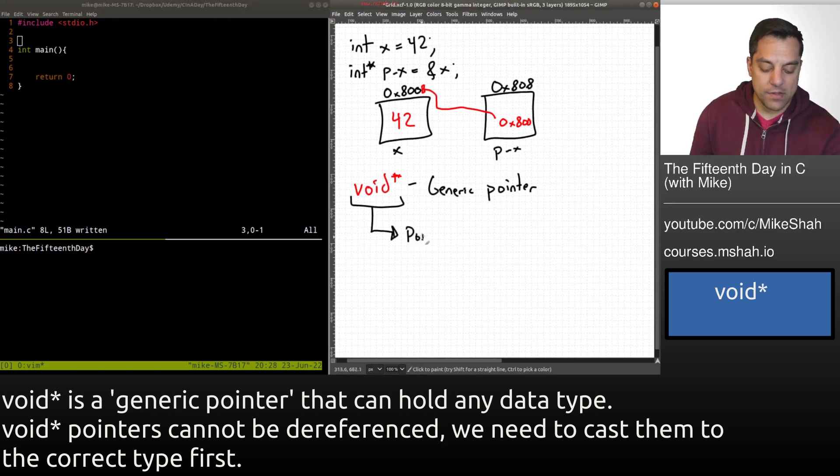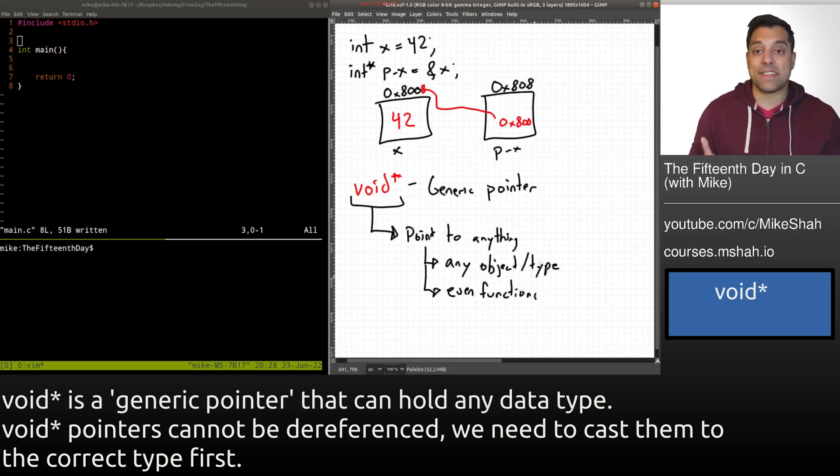So again, in this type here, this means we can point to anything. Because again, all this really is this void star here is just holding a memory address. Now, because we can point to anything, that means we can point to any object or type and even functions.